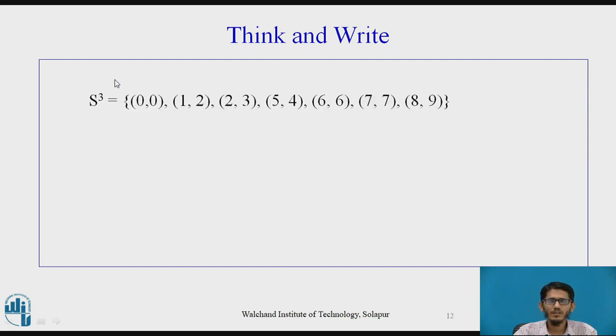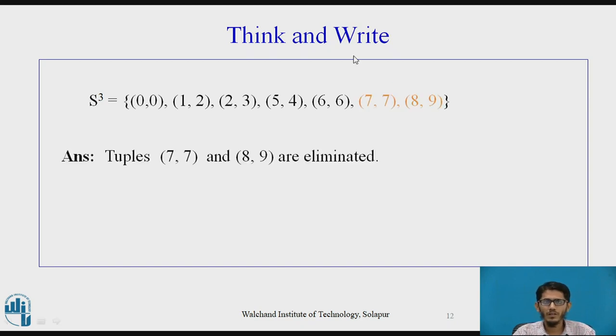Now, this is s3 consisting of 7 tuples (0,0), (1,2), (2,3), (5, 4), (6, 6), (7, 7) and (8, 9). Now, we are interested to find out which tuples could be eliminated and the answer is these two tuples (7, 7) and (8, 9) are eliminated. Now, what could be the reason? Now, when we have started this problem, we said that the maximum knapsack capacity is 6. So, if 6 is the maximum capacity, we are going to consider only those tuples whose weight would come up to 6. So, hence, the tuples with weight value greater than 6 that is this one and this one would be eliminated. That is, we can say that tuples with w greater than 6 are eliminated.